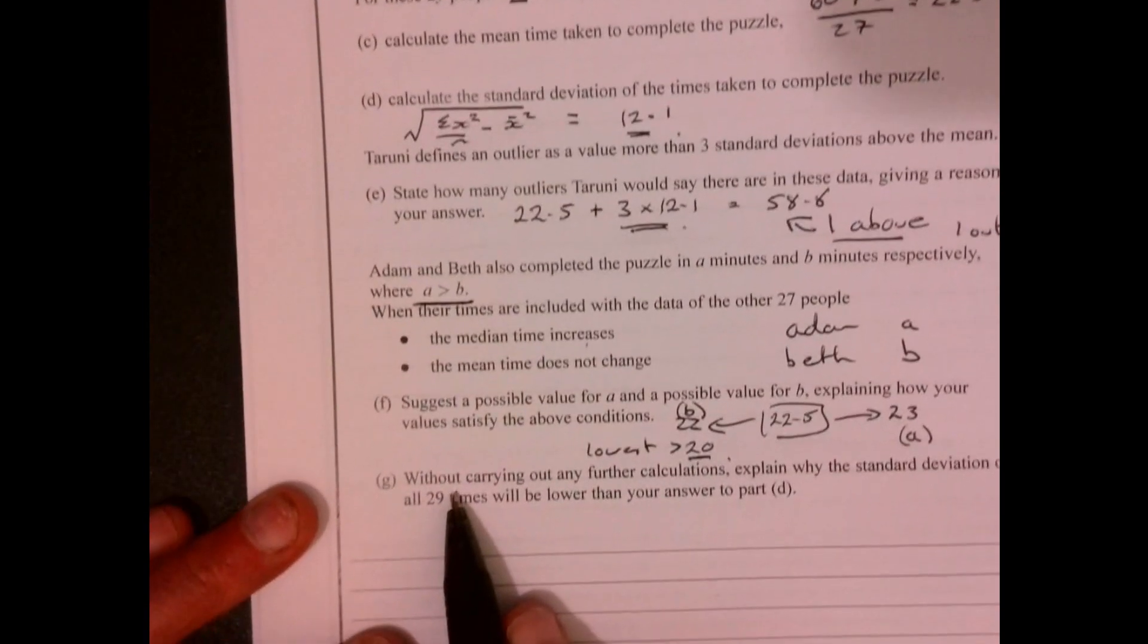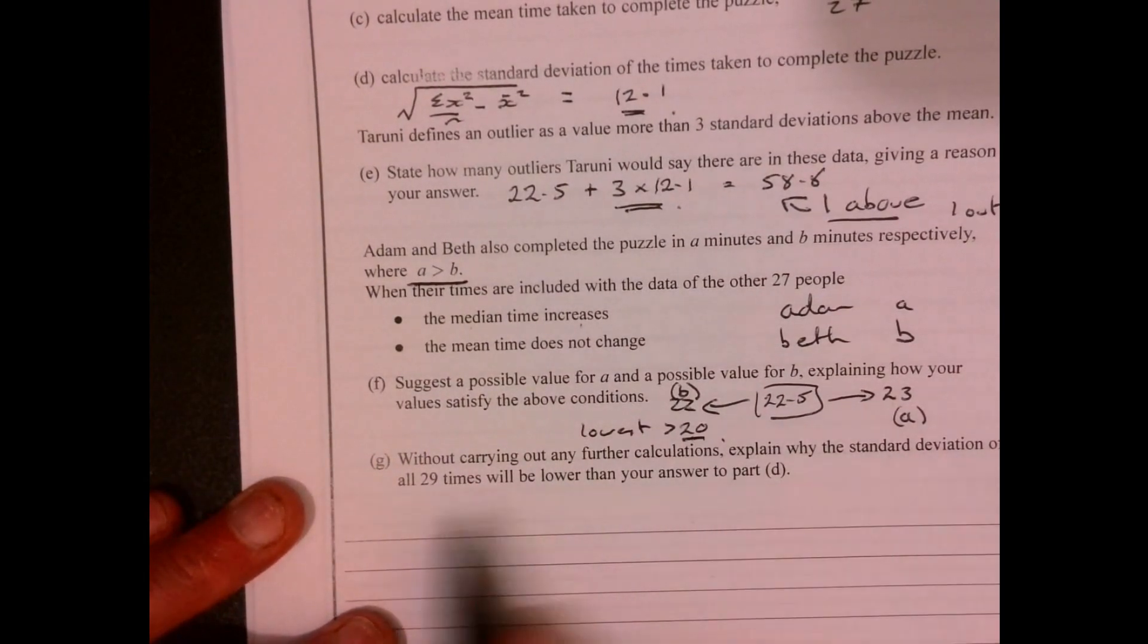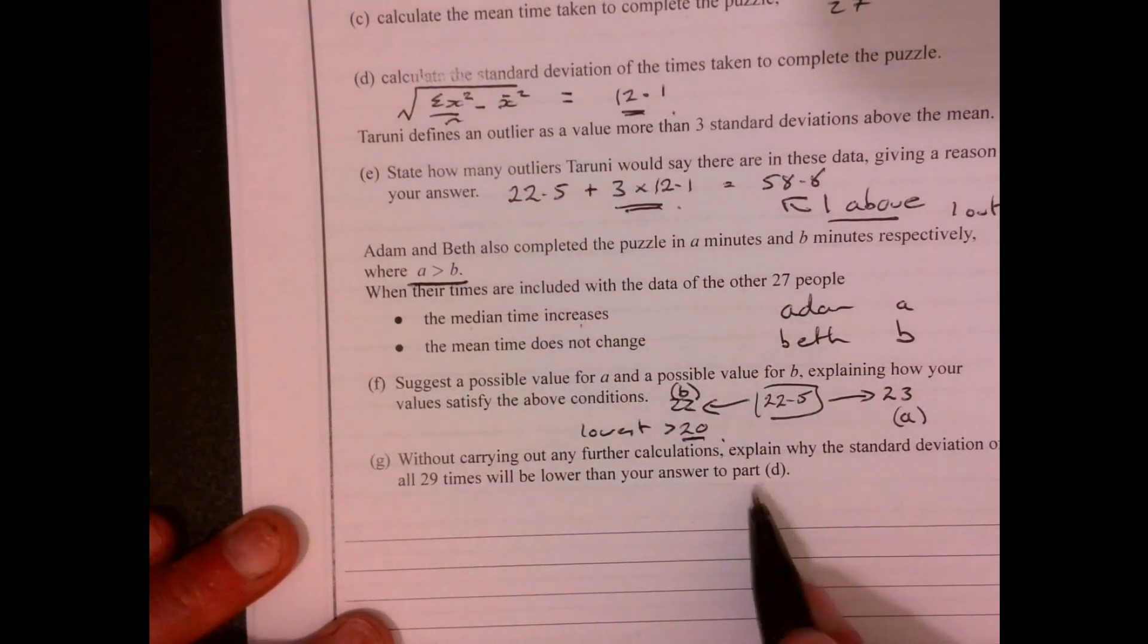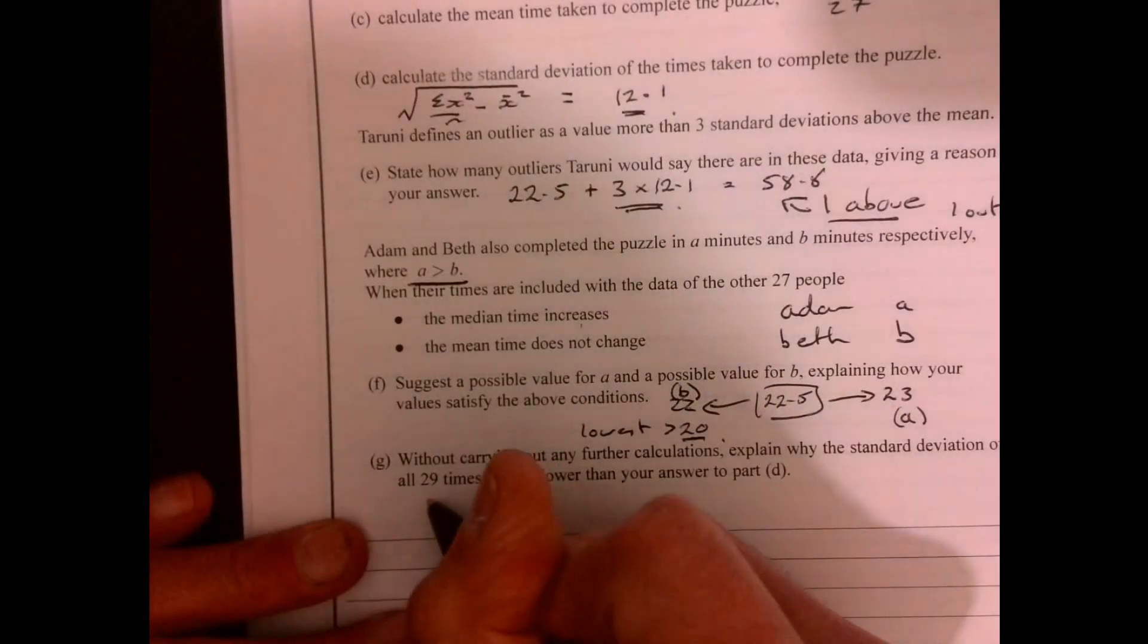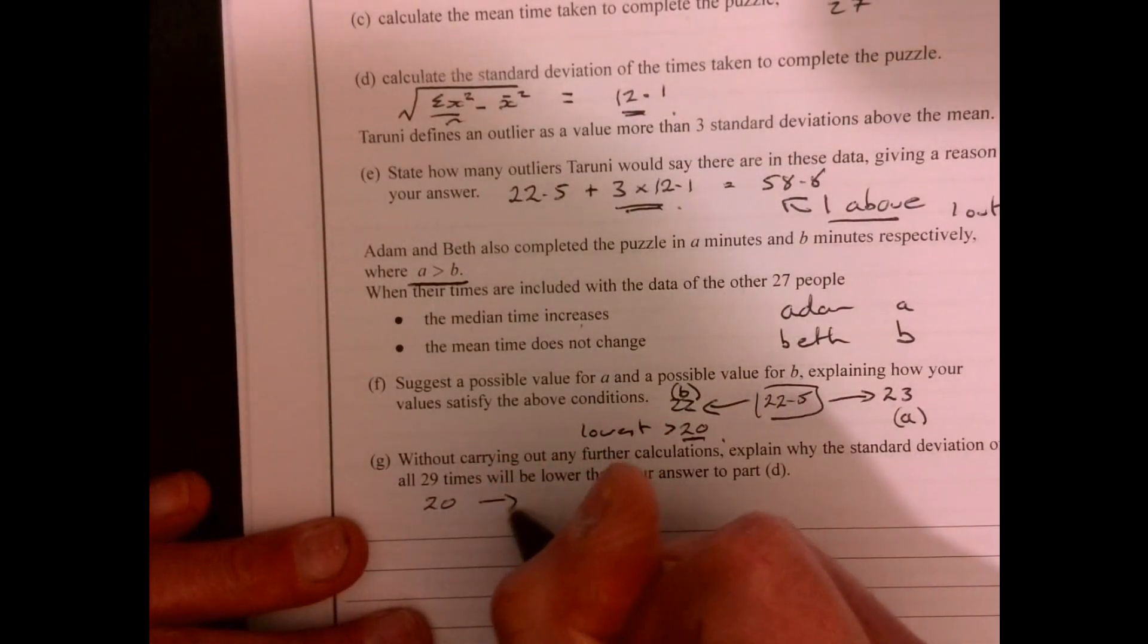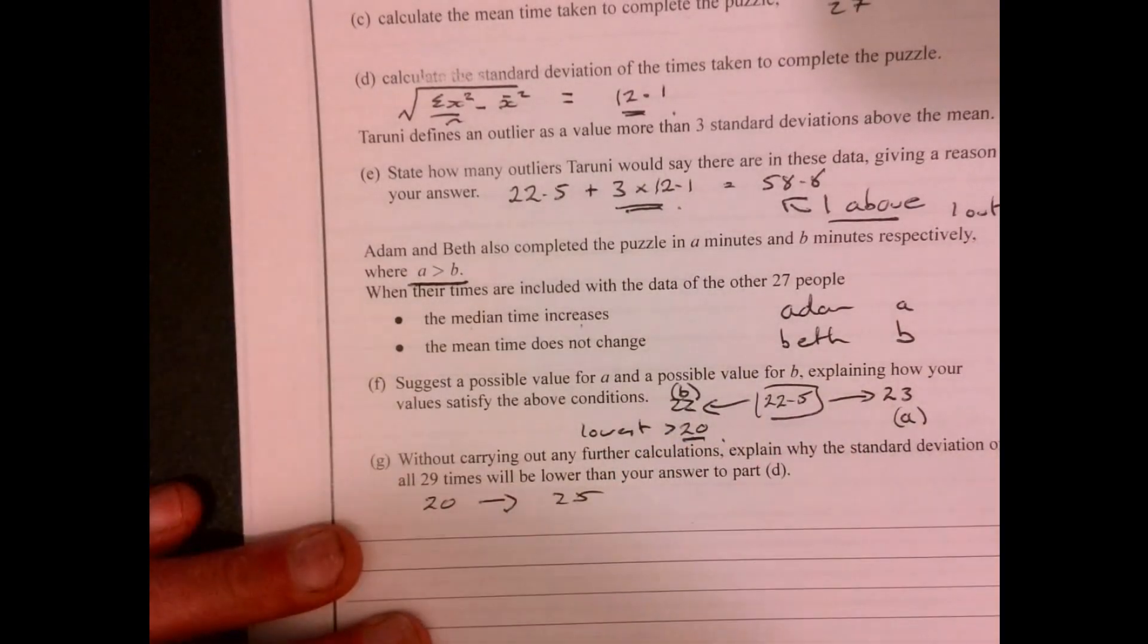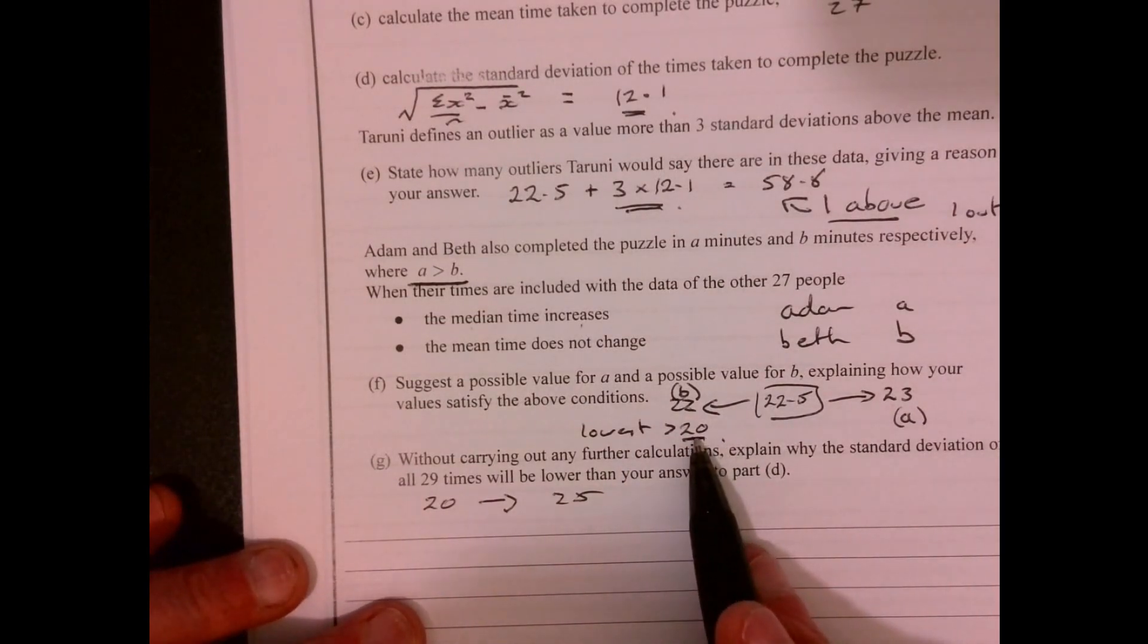And then part G, without carrying out any further calculations, explain why the standard deviation for 29 times would be lower. So if we're going to include those two extra values, what's going to happen to the standard deviation? Well, let's imagine we took the maximum that it could be, sort of like the 20 and 25. So obviously I know it'd need to be more than that. But let's just say it's 20 and 25.